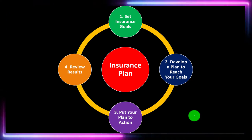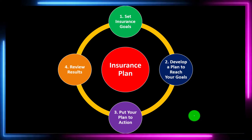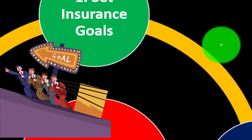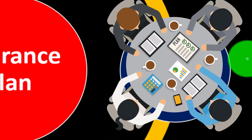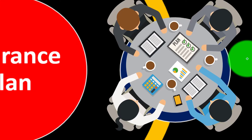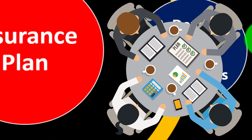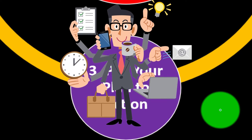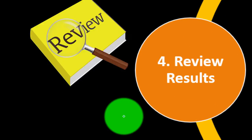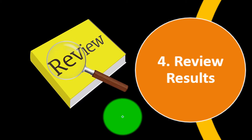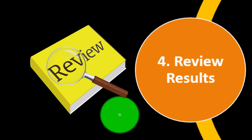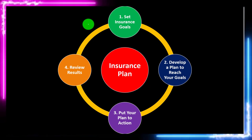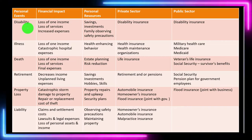Most formal plans will look something like this. Number one, we're going to set our goals, laying out the goals. Number two, we're going to develop a plan to reach the goals. Number three, we put the plan to action. And number four, we analyze the results and then possibly set the goals again, and the cycle then continues.